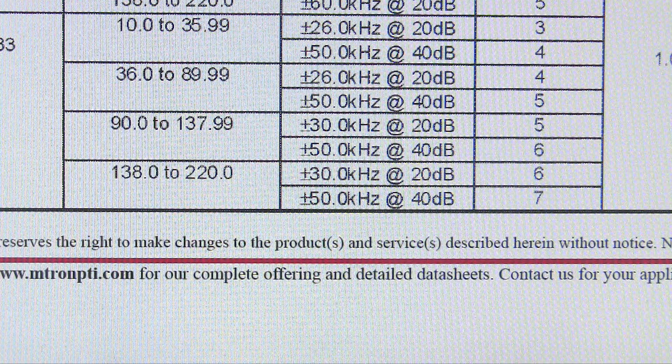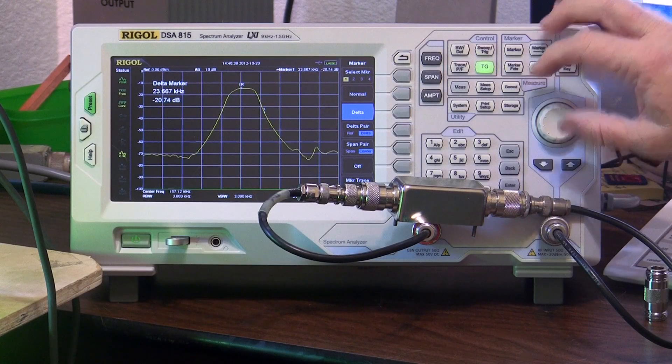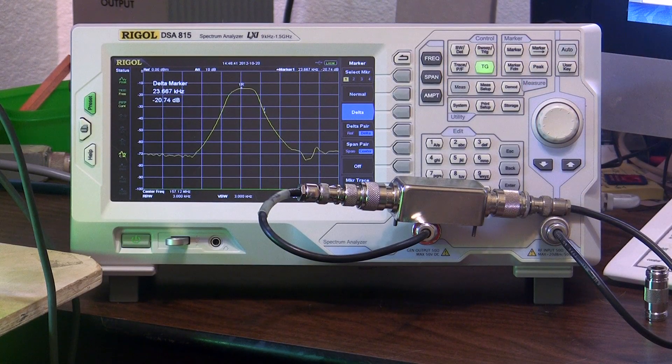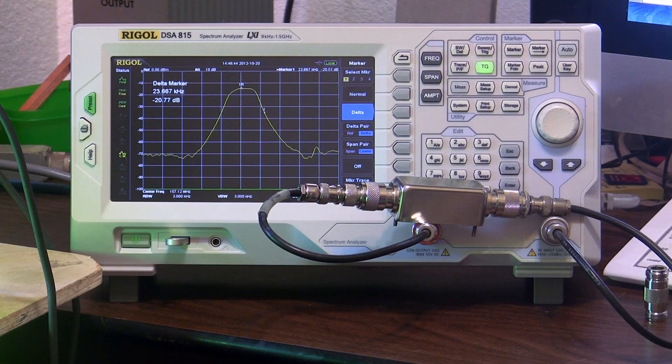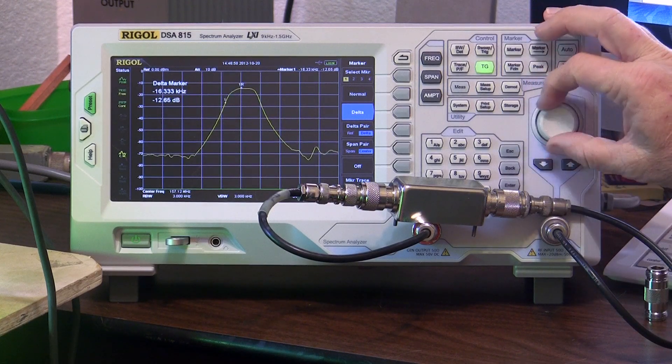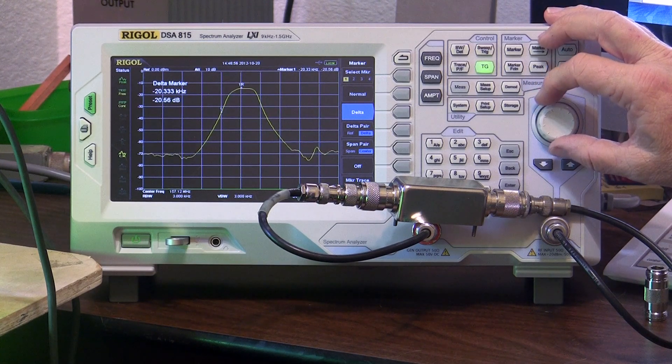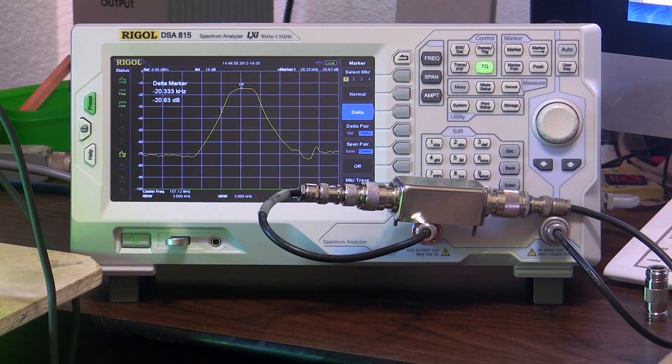The spec, as can be seen on this chart, actually indicates it should be plus and minus 30 maximum at 20 dB. It doesn't give a 3 dB corner. So let's go to 20 and see what we get. That's about as close as I can get. It's plus 23, which is definitely within the 30 kHz. And it's minus 20, which is definitely within the plus and minus 30 kHz.